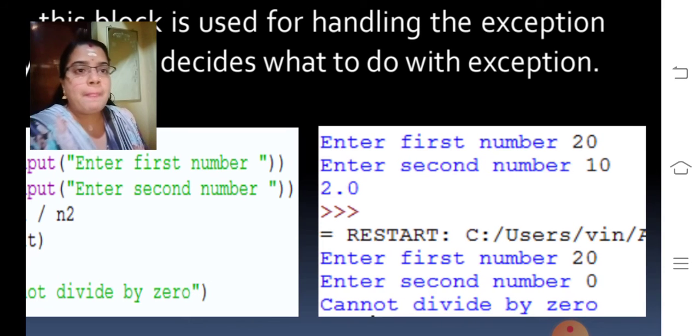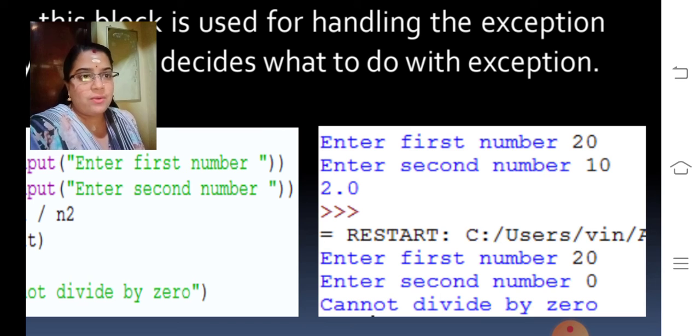Look at the output. If you are giving the first number and second number as 20 and 10, it will display 2.0. And if you are giving 20 and the second number as 0, it will display cannot divide by 0. That is called exception handling.